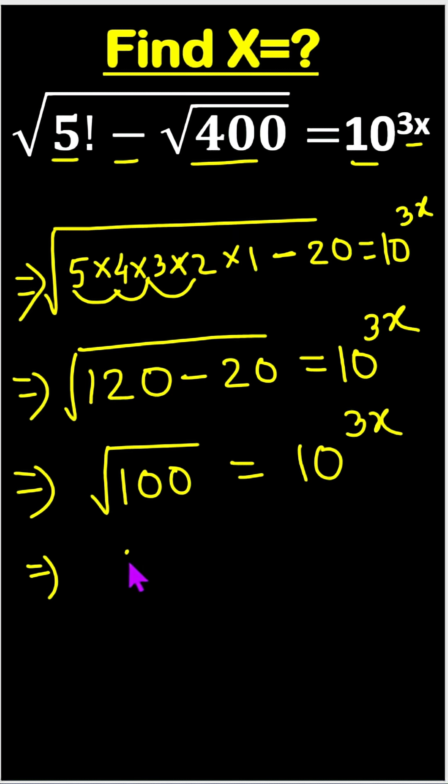Square root of 100 is 10, which equals 10 to the power 3x. Here, 10's power is 1. So we have the same base, which is 10. Once the bases are the same, the powers will be equal.